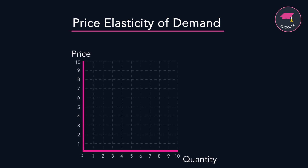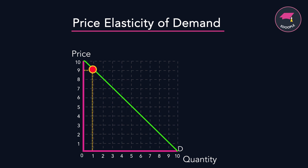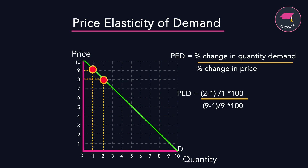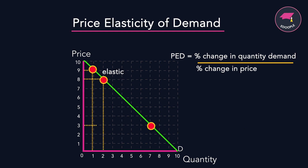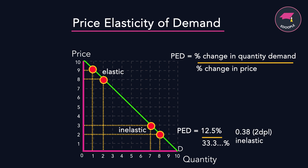Let's look at how PED can vary along a demand curve. Here we have a reduction in price from $9 to $8, which is a percentage change of 11.1%. The change in quantity is that it's doubled, which is a 100% change. So 100% divided by 11.1 equals 9, which is highly elastic. At the other end of the diagram, price reduces from $3 down to $2 and quantity rises from 7 to 8. Plugging those numbers into the formula gives a PED of around 0.38, which is highly inelastic.